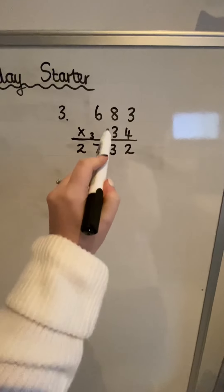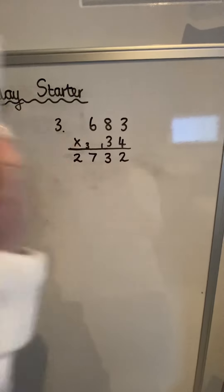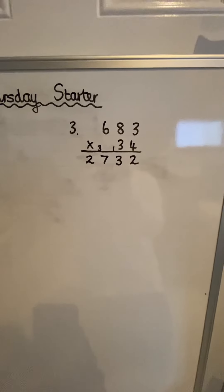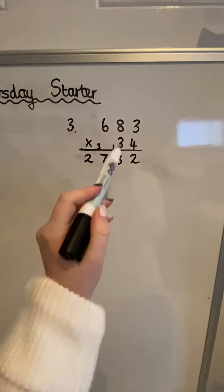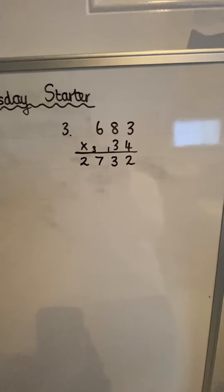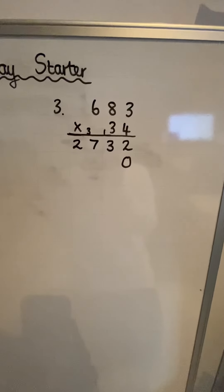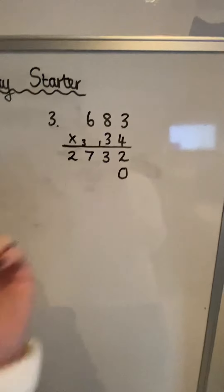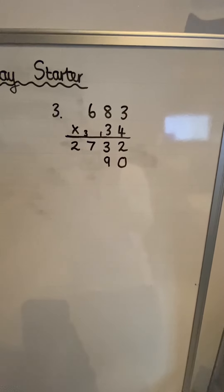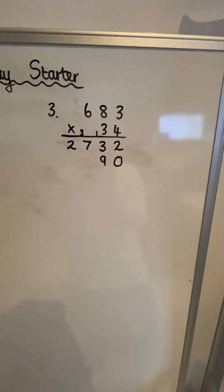Now I need to move on to the tens digit in the second number, which is three, and multiply that by each of the digits in 683. I'm going to begin with three times three — but remember, it's 30 times three, so because I'm now multiplying tens I need to start by putting a zero in the ones column. Then three times three gives me nine, which goes here, so we have 90.